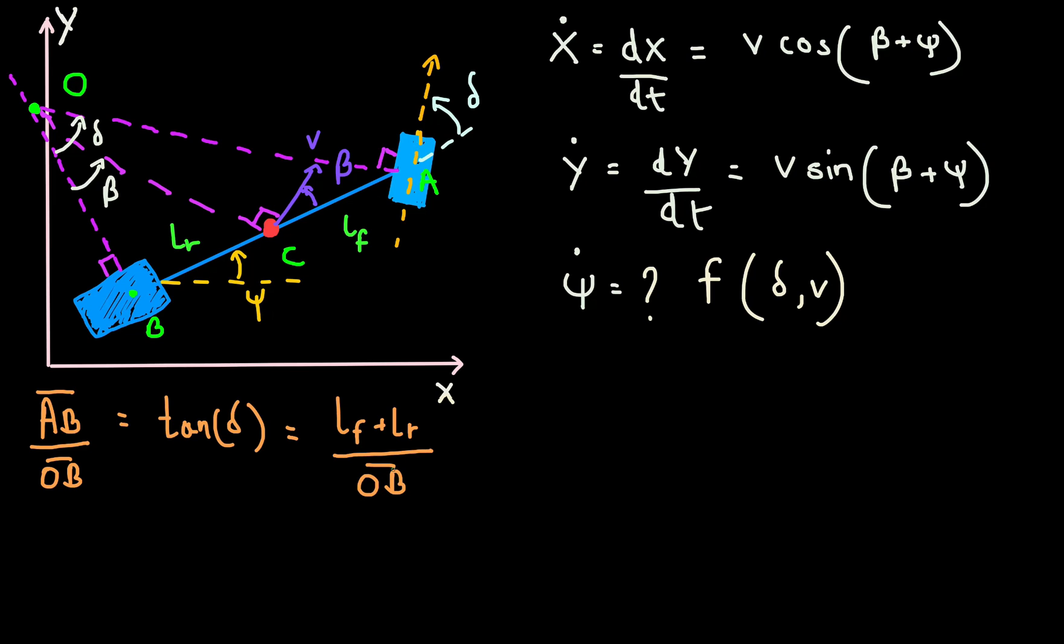Now if you write that down, that equals the length OC times psi dot and that's equal to v. So now if you rearrange this, we get that psi dot is equal to v divided by the length OC.